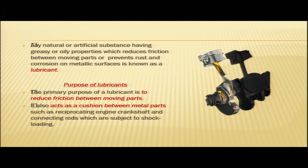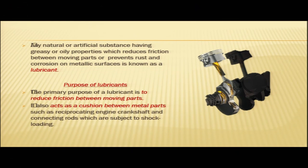The primary purpose of a lubricant is to reduce friction between moving parts. It also acts as a cushion between metal parts such as the reciprocating engine crankshaft and connecting rods, which are subject to shock loading. The lubricant is a natural or artificial substance having greasy or oily properties that reduces friction and prevents rust and corrosion.